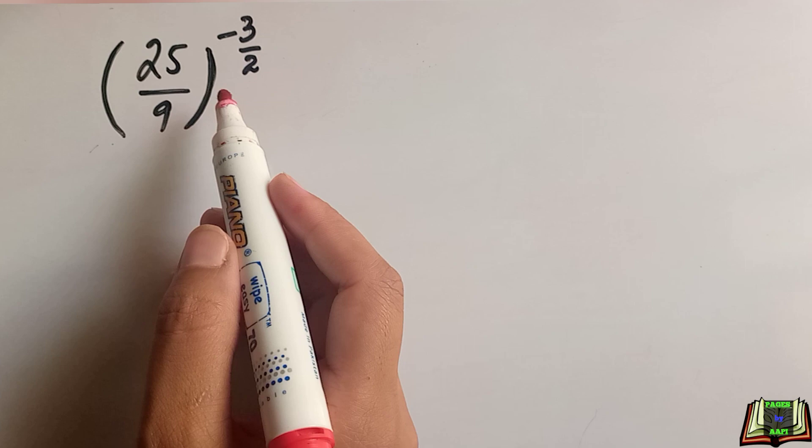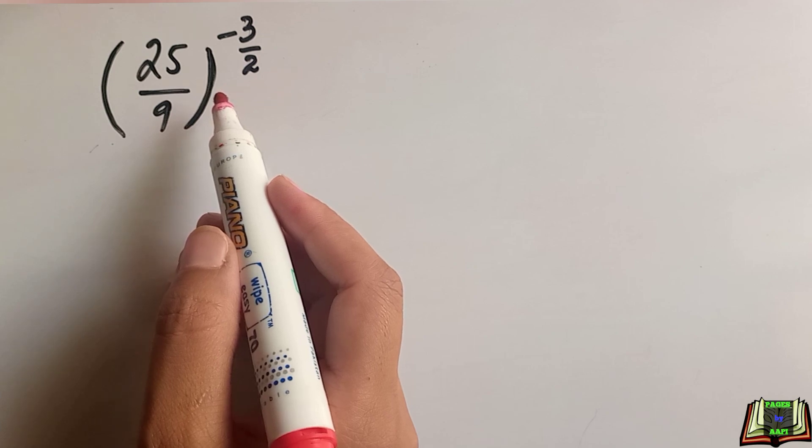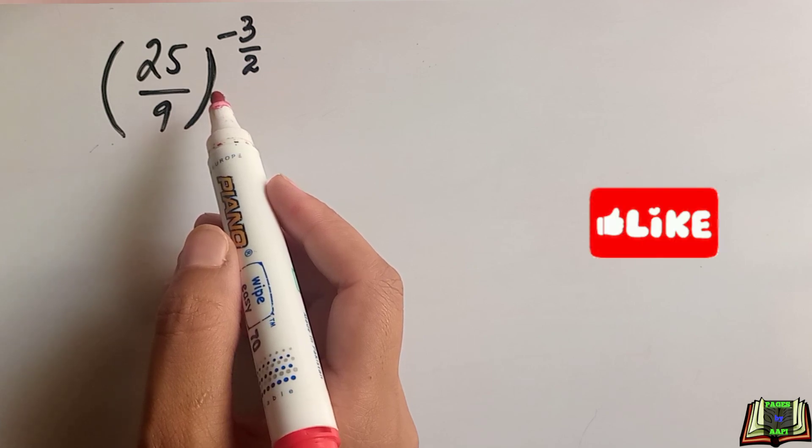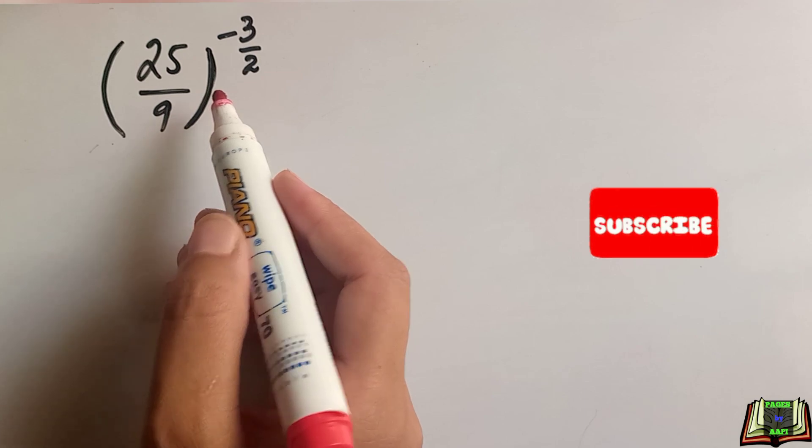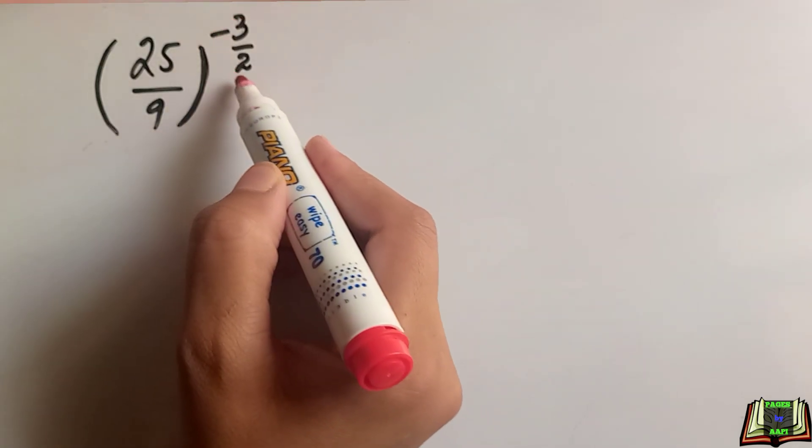We can see that the exponent is in negative form and it is a bit difficult to solve the negative exponent or power, so first of all we will change this negative power into positive.